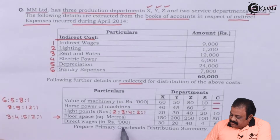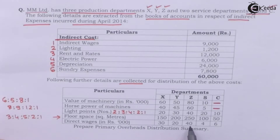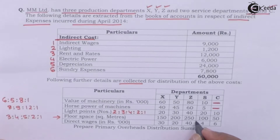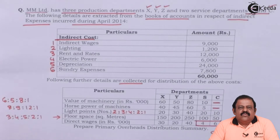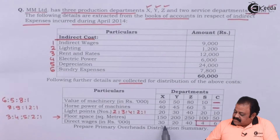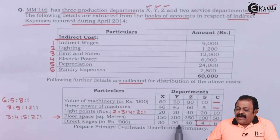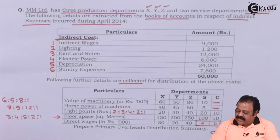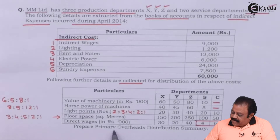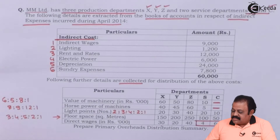Direct wages: 30,000, 20,000, 40,000, 4,000 and 6,000. In this case, direct wages incurred for service departments should be considered as overheads, whereas direct wages actually paid for production departments will not be considered as overheads. Prepare the primary overhead distribution summary.